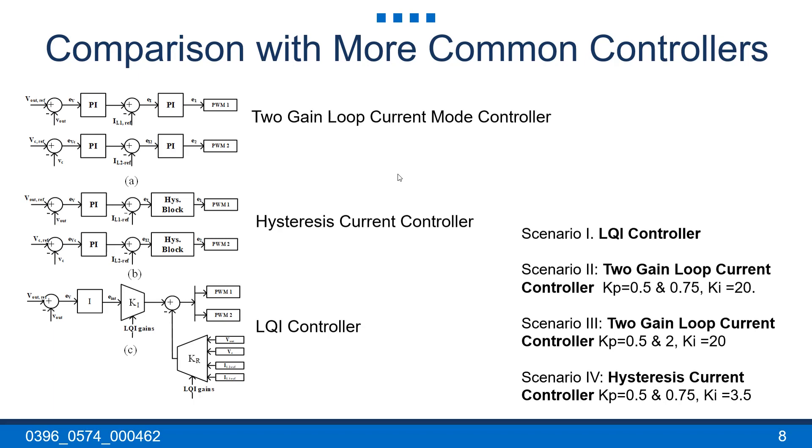The converter maintained its output voltage when the load changed abruptly from 50 to 25 ohms and returned back to its initial value. Four scenarios will be considered and compared. Scenario 1, we will be using an LQI controller. Scenario 2, we will be using a two-gain loop current controller, with the proportional gains 0.5 and 0.75, and the integrator gain is 20.